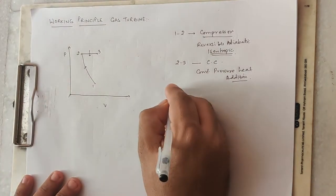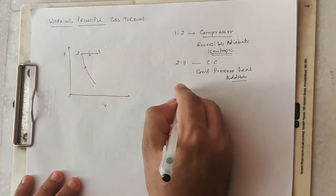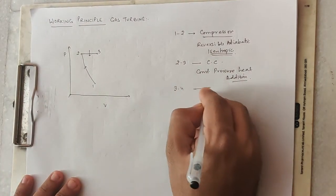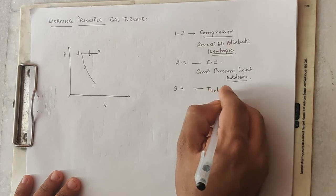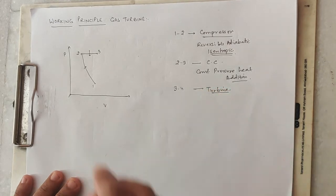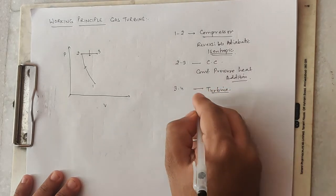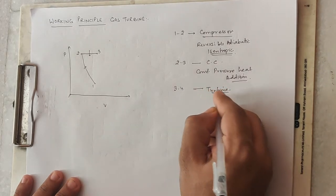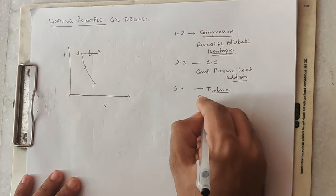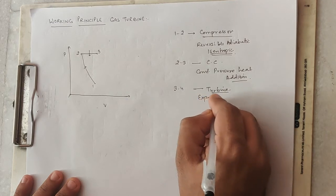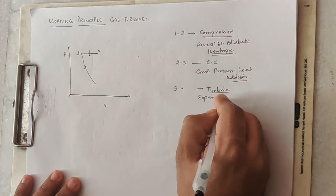Process 3 to 4 takes place in the turbine. The turbine is an expansion device, and this process is a reversible adiabatic — that is, an isentropic expansion.